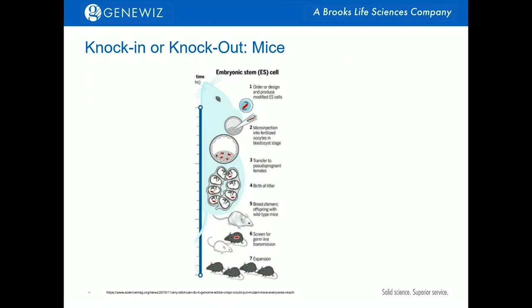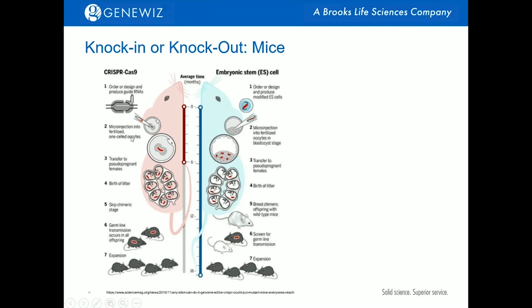Knock-in or conditional knock-out mouse is a typical example of how single-strand DNA combined with CRISPR has changed the way people generate mouse models. Previously, the knock-in was achieved by homologous recombination without a double-strand break in a stem cell, which was then injected into the developing embryo at the blastocyst stage. Only some of those cells would develop into the germline cells, which would grow up to the next generation, and you could only find out if you got your targeted insert in the F1 generation. As an alternative, CRISPR complex and single-strand DNA can be injected into a fertilized egg directly.